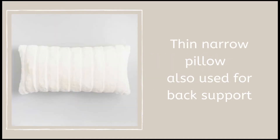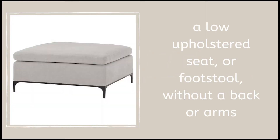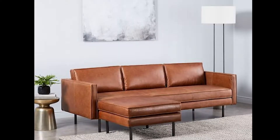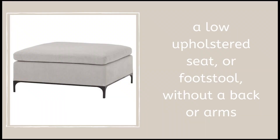A lumbar pillow is basically a thin narrow pillow, and sometimes they're used in chairs or sofas for back support. An ottoman is a low upholstered seat that can be used as a footstool, and these are typically found at the foot of a sofa. They're flexible to move from either side, and most of the time an ottoman has legs.